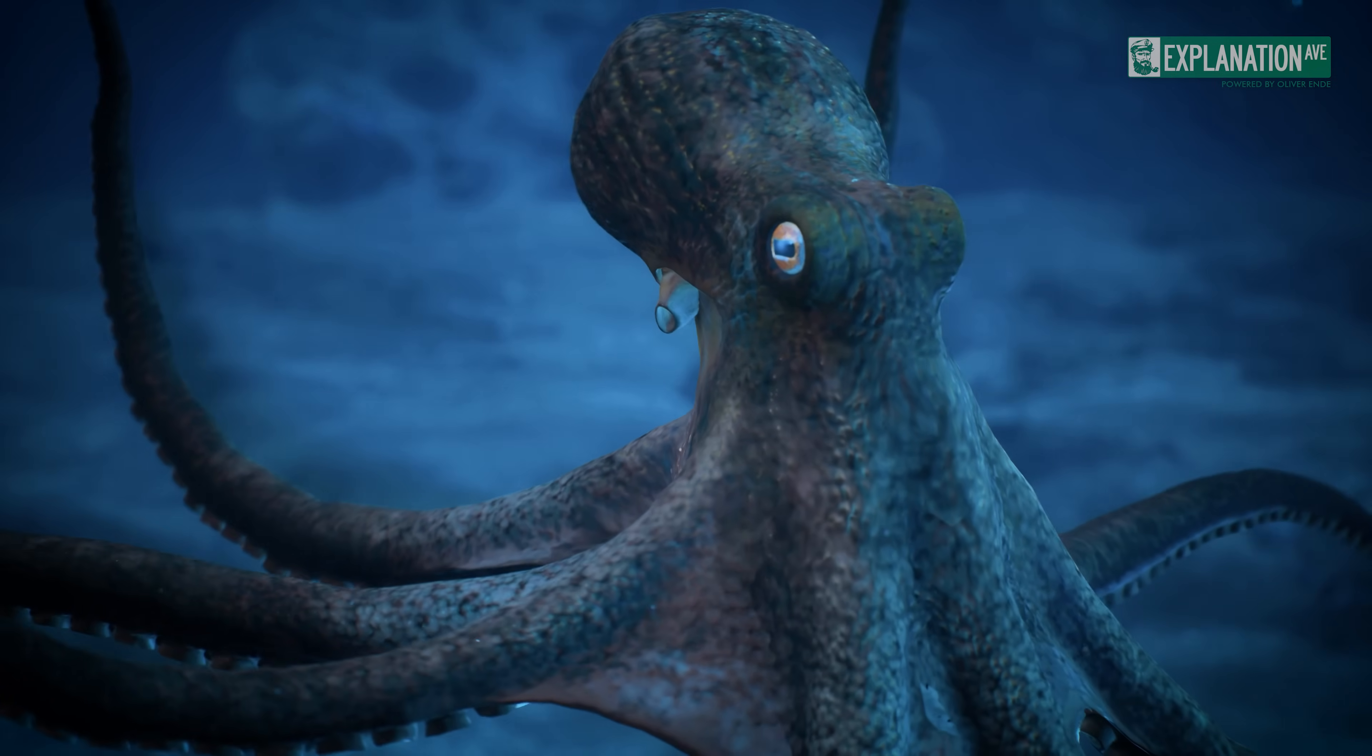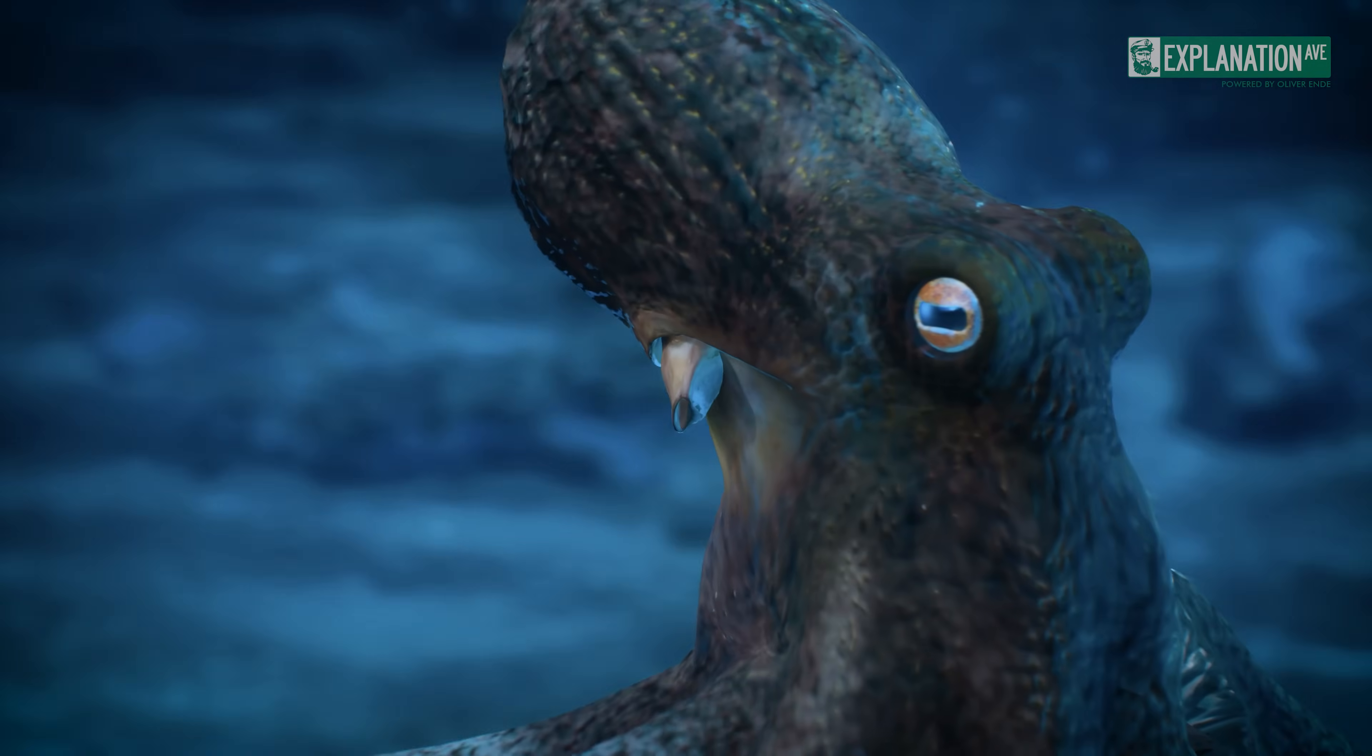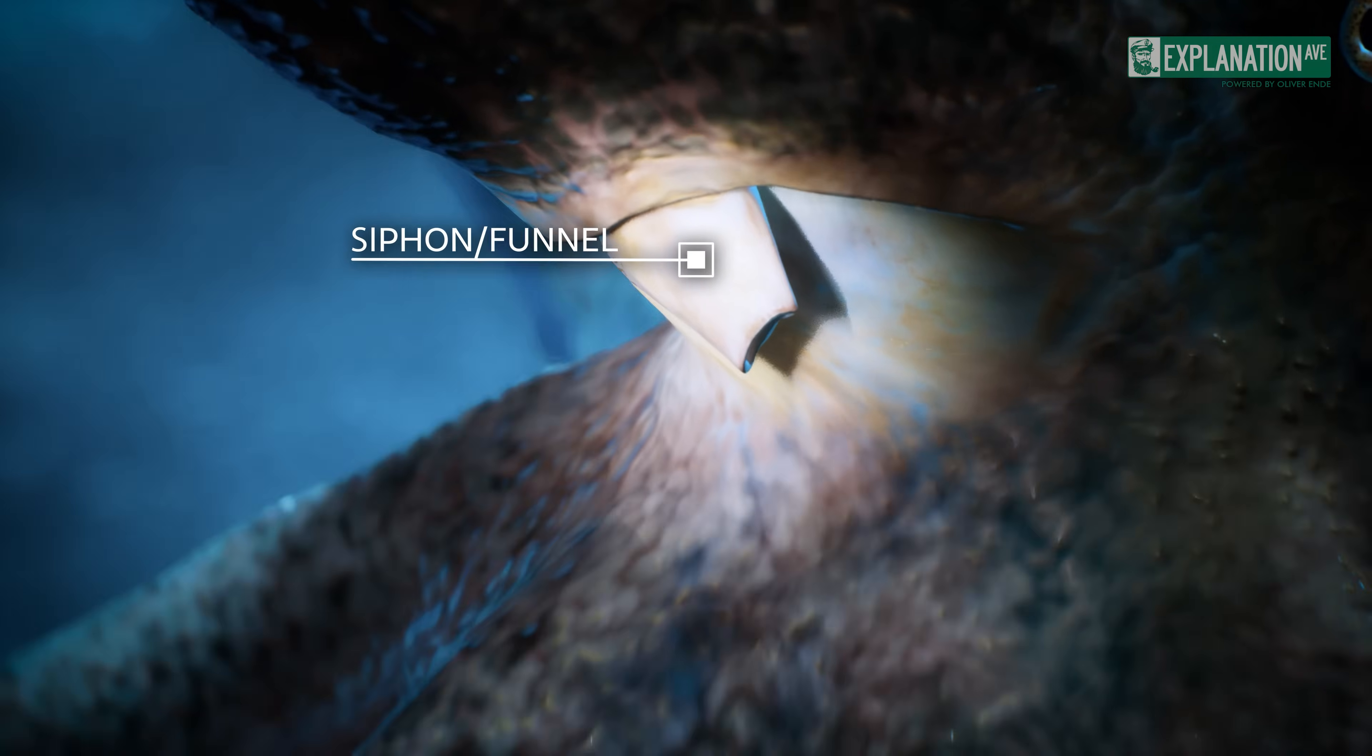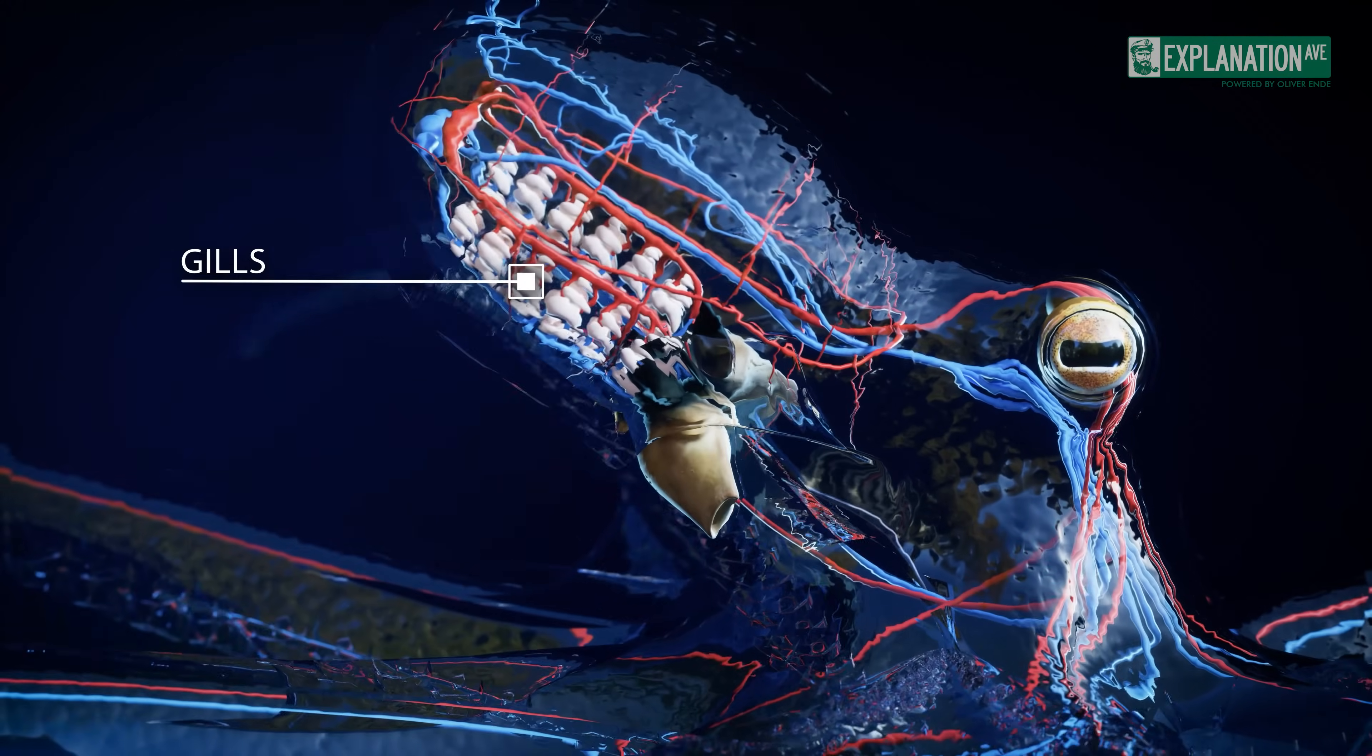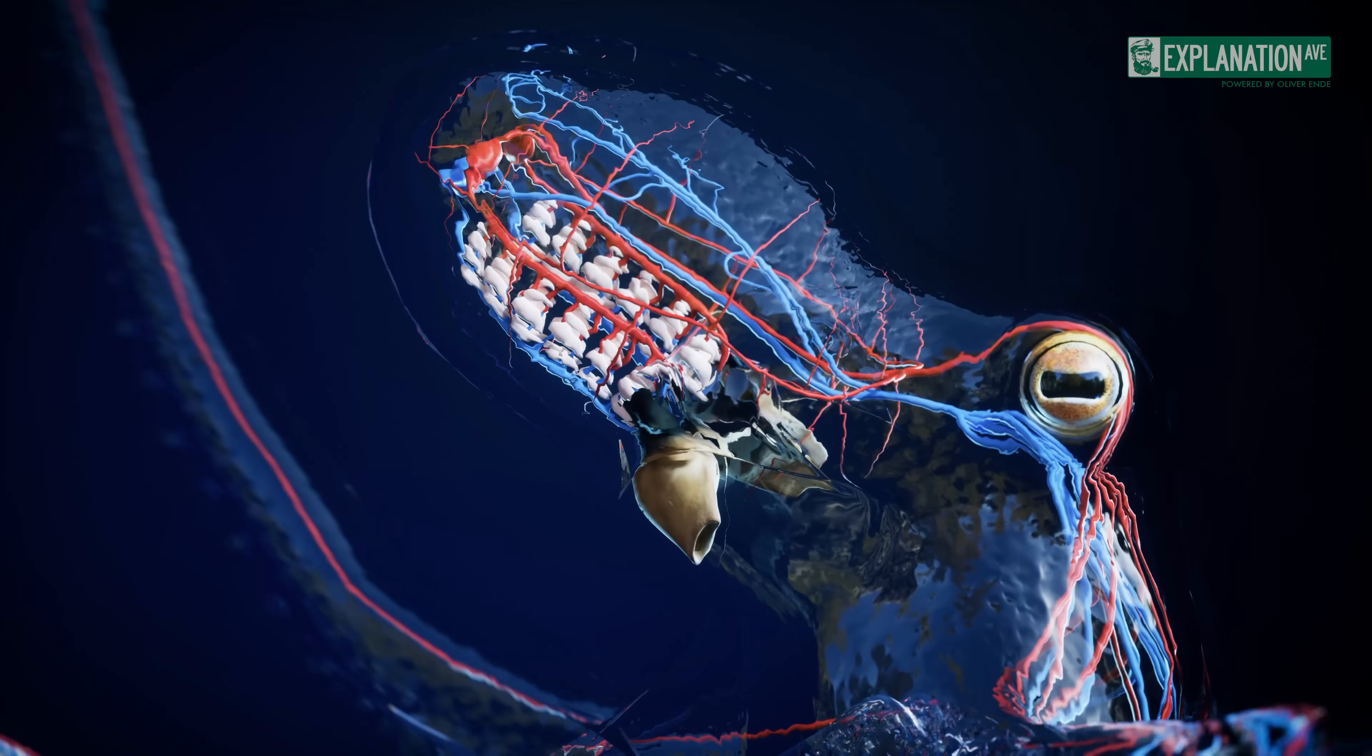The funnel organ, also known as the siphon or funnel, is located at the bottom of the transition between the mantle and the head. It is an integral part of the respiratory system, expelling water that has previously passed through the gills from the mantle cavity, taking in oxygen and releasing carbon dioxide.